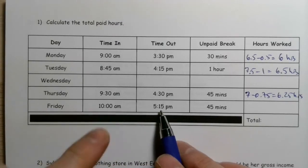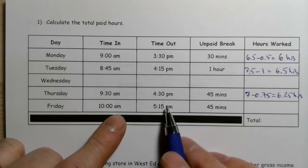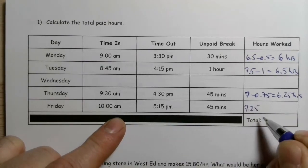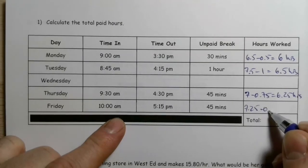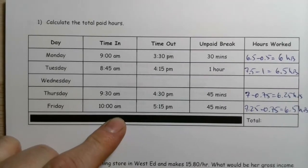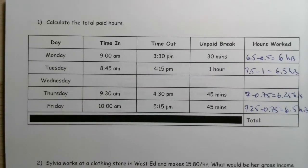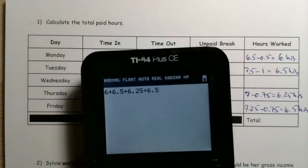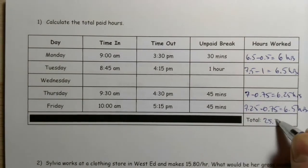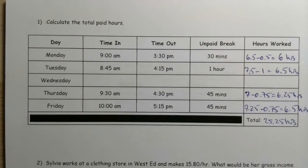Friday, 10 a.m. to 5:15 p.m. Ten to 12 is two hours, and adding that to 12 to 5:15 gives us seven hours and 15 minutes, or 7.25 hours. Subtracting 45 minutes, that's 7.25 minus 0.75, which gives us 6.5 hours. Adding everything up — 6 plus 6.5 plus 6.25 plus 6.5 — we get 25.25 hours total.